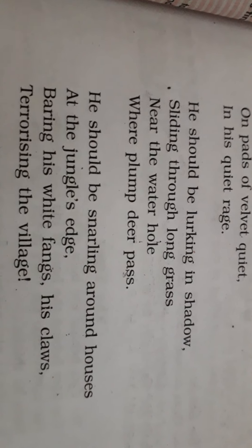Let's do the next stanza. He should be snarling — he should be lurking in shadow, sliding through long grass near the water hole where plump deer pass. It means the tiger should have been in the forest where he will hide himself with the long grass and wait near the water body so that the deer may come there for drinking water and he can make them his food.